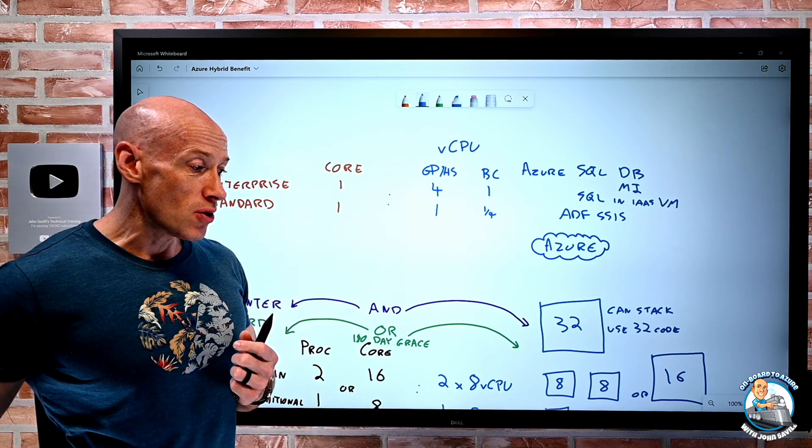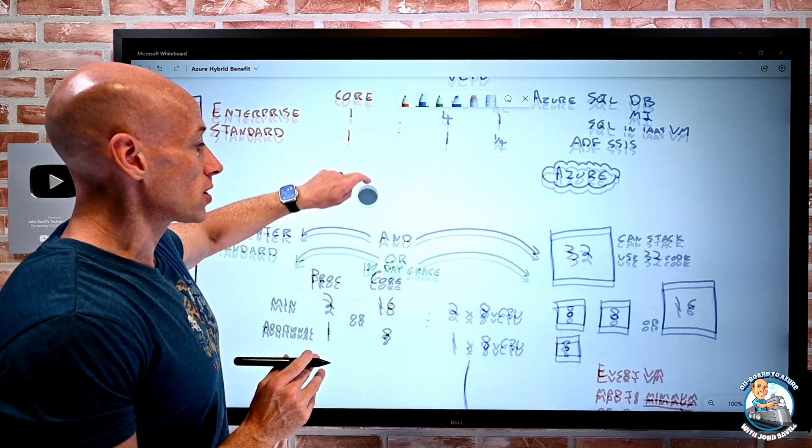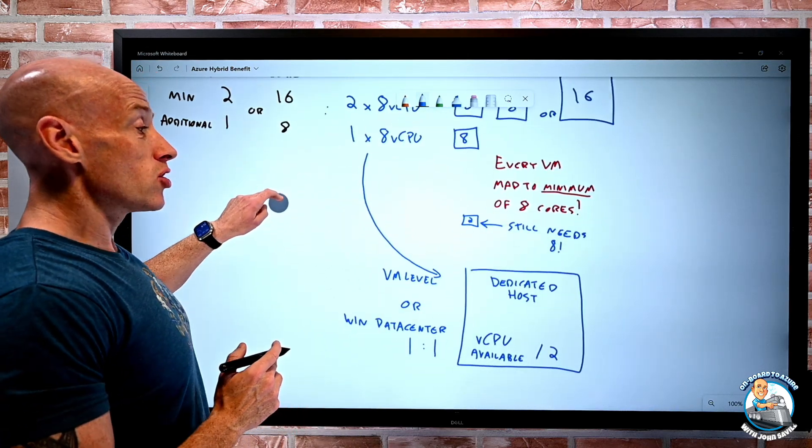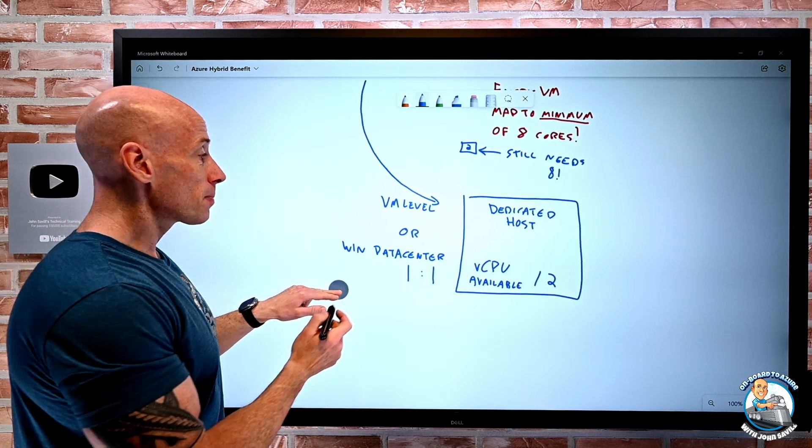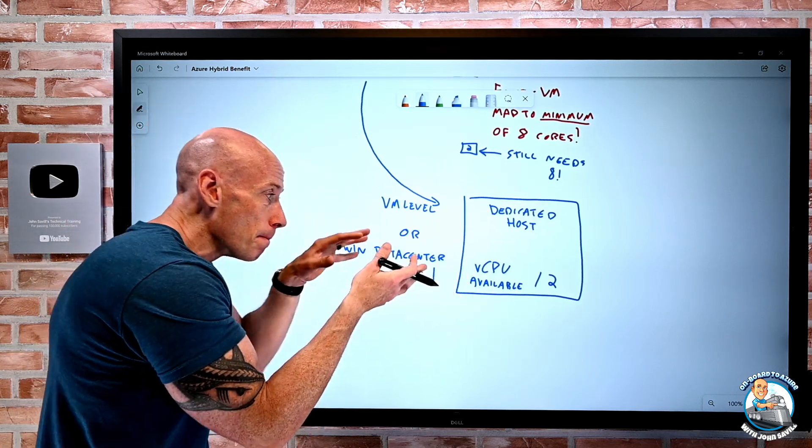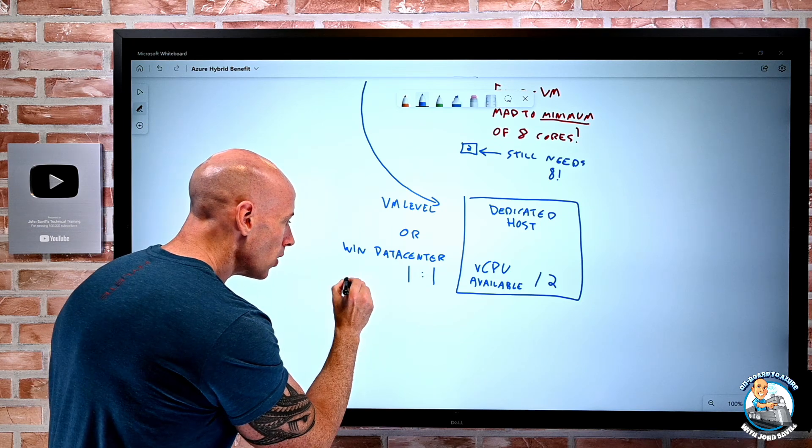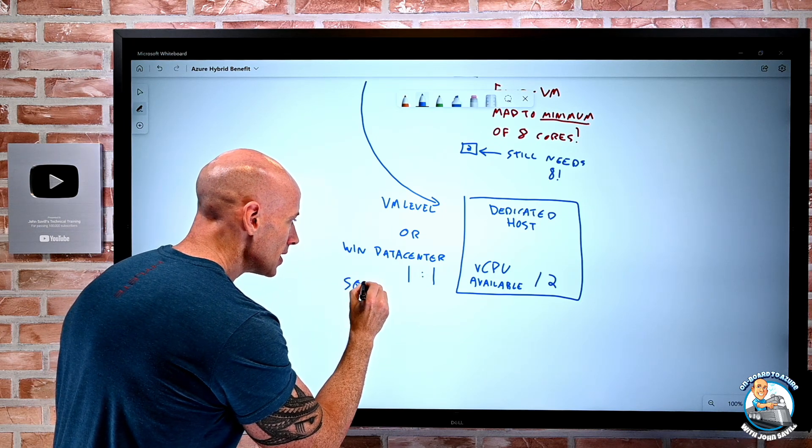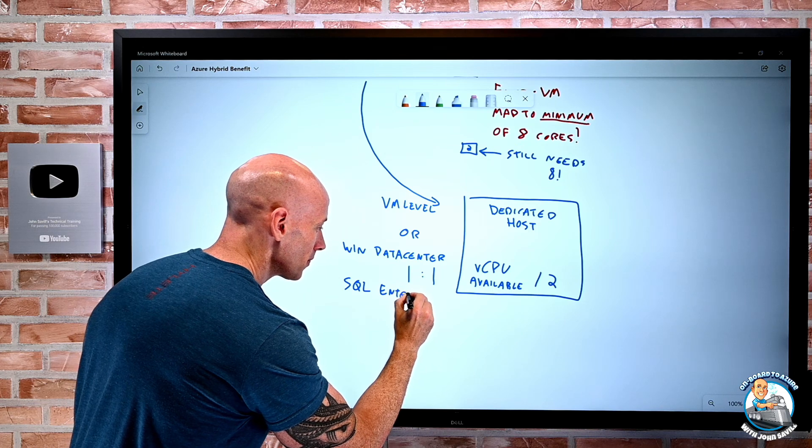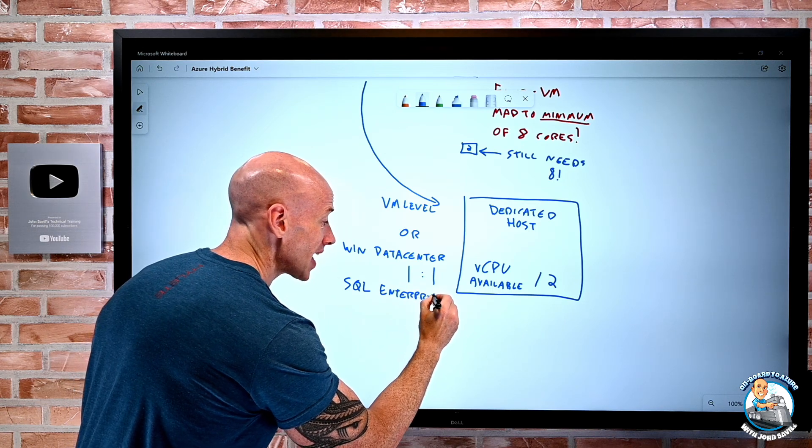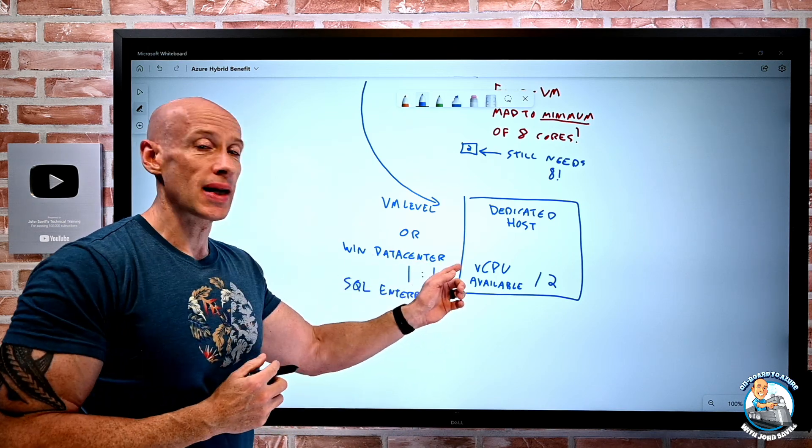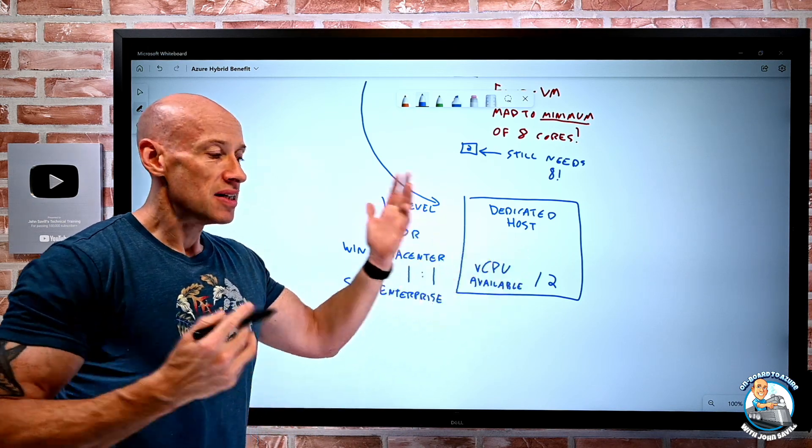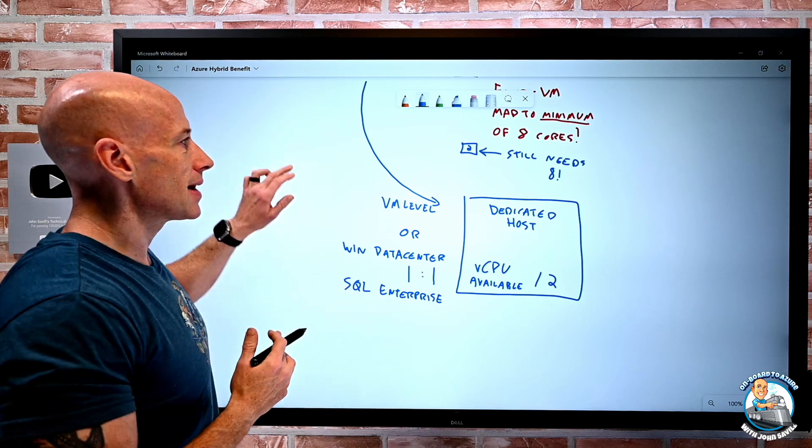And just like with regular Windows, I could apply it to dedicated host as well. Once again, it could just be at the VM level, in which case it works exactly the same. Or if I did want to apply it at the box and buy it out, it has to be SQL Enterprise. And it works exactly the same way. One to one of enterprise for the number of virtual CPUs available divided by two.